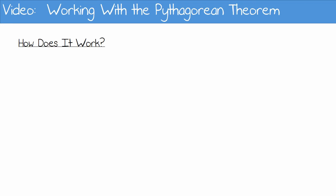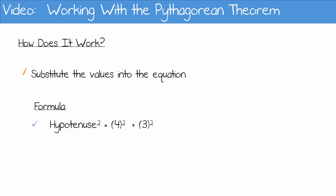Now that we know that, we can substitute the values given in the question into the equation. The hypotenuse squared is equal to 4 squared plus 3 squared.